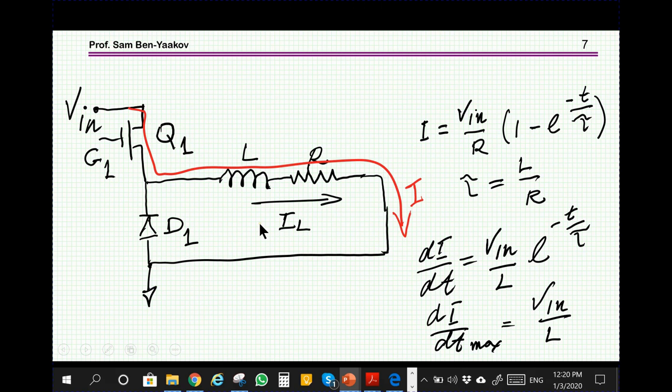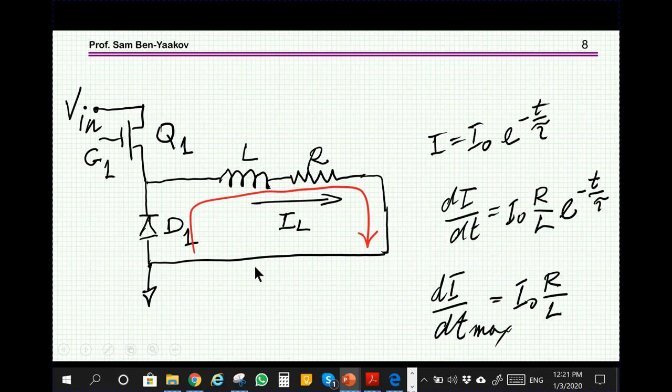We have two slew rates involved. One is the up, that is increasing the current. In this case, the current will follow this equation, and therefore the slew rate of the current is this expression. The maximum value is Vin over L, which is reasonable because at the beginning there's no current, so the inductor is limiting the rate of increase of the current.